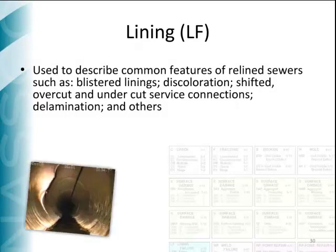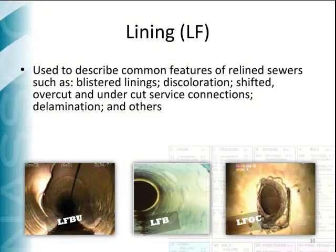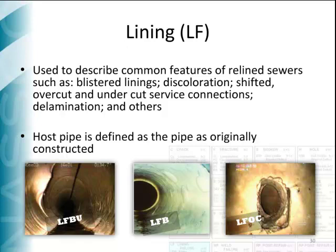Defects in lined sewers are recorded using the lining defects code in the structural defects family. Defects such as discoloration, shifts, overcuts, undercuts, delamination, and others can be coded. For these codes, remember that the host pipe is defined as the pipe as originally constructed. See some examples of a buckled lining, a blistered lining, and an overcut surface at the bottom of this slide.